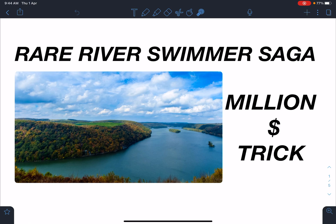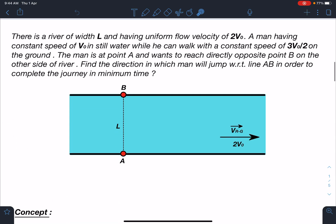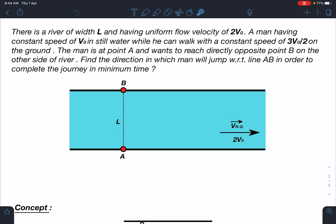The name of this is River Swimmer Saga, and it's a million dollar trick for physics lovers. So guys, this is the original problem, and here is the statement of this problem. Such type of problem exists, but the method is very unique.